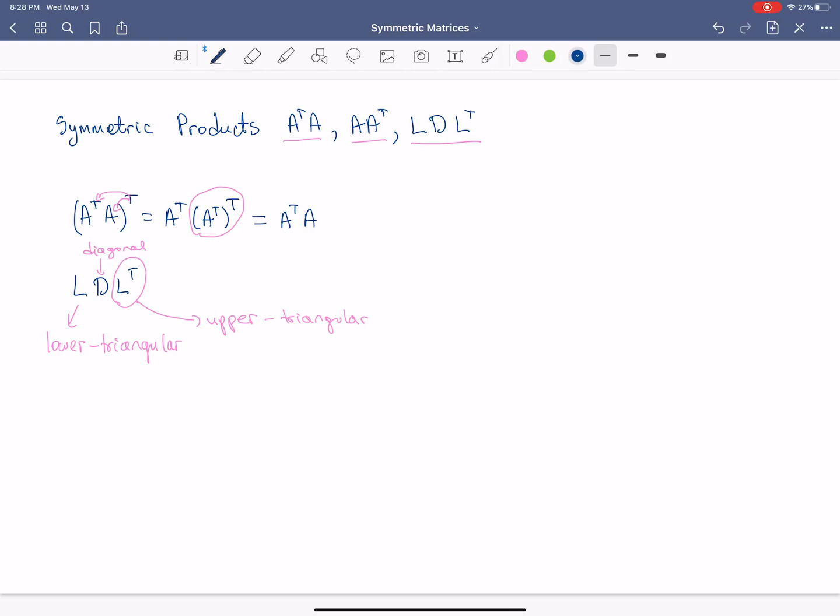D is a diagonal matrix. So when you take the transpose here, you follow the rule for taking the transpose of a product, the order gets reversed. We have L transpose transpose times D transpose times L transpose. And just as before, L transpose transpose is just L. Well, any diagonal matrix is symmetric, which means that D transpose is just D. And L transpose is L transpose. So we're going back to that original form. So all three of these products give us symmetric matrices.